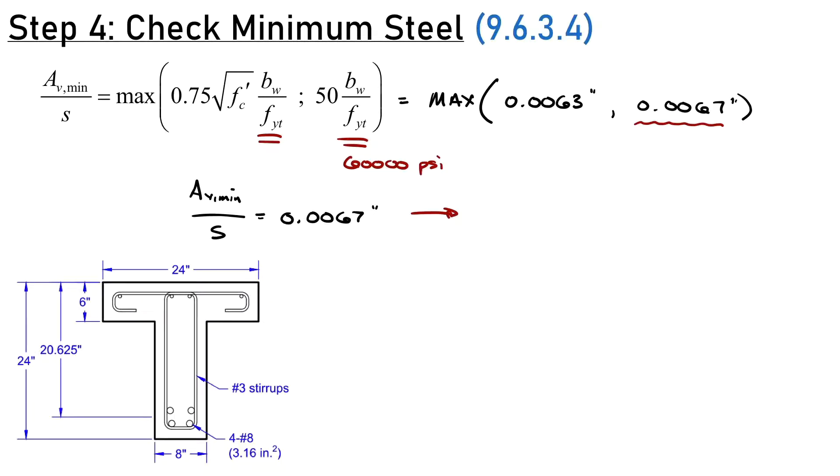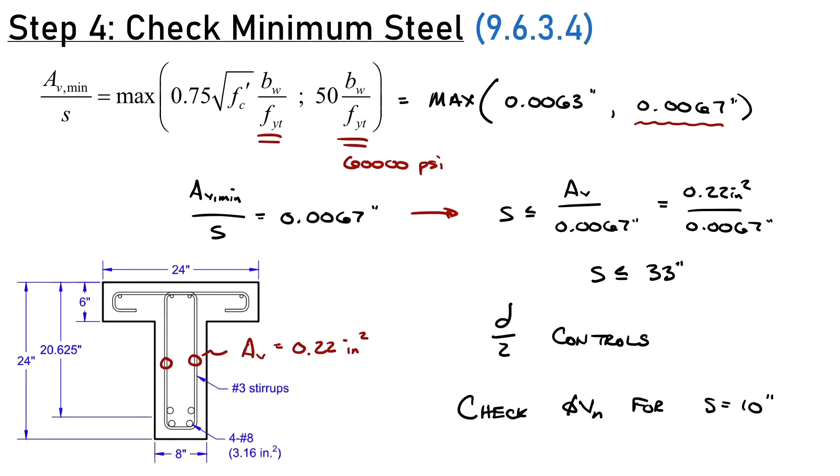I'd like to flip that around to find my spacing requirement. S is less than or equal to AV divided by 0.0067 inches. I need to know what AV is. I have two legs for my stirrup, number three bars with area 0.11, so AV is 0.22 square inches. Therefore, S has to be less than or equal to 0.22 divided by 0.0067, which is 33 inches. Of course, D over 2 controls at just above 10 inches. I'll check my capacity for a 10-inch spacing, the least amount of steel I can get away with.